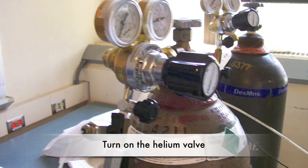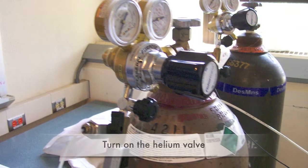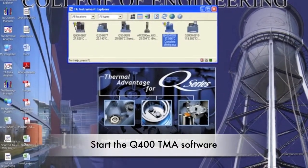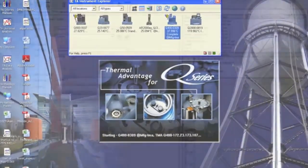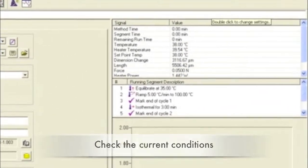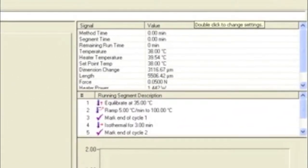The instrument operates under a helium purge. Open the main valve and then the smaller valve for the TMA. Click on the TA Instrument Explorer and double click on the Q400 icon. Check the purge flow and values in the top right corner. The purge flow should be approximately 50mL per minute.